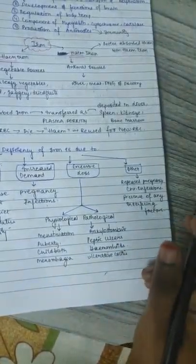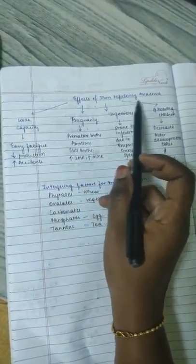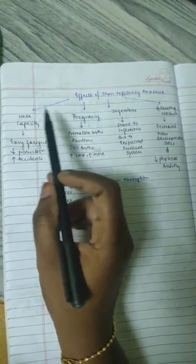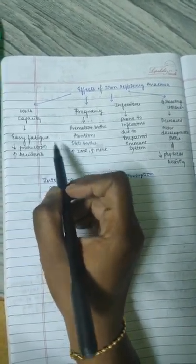Coming to the consequences of deficiency of iron, when iron is decreased, it shows its impact on work capacity, causing easy fatigability and decreased productivity, and also increased accidents in the working environment.